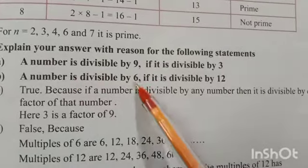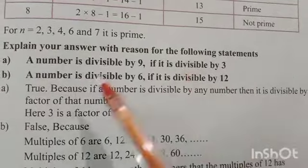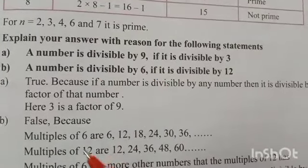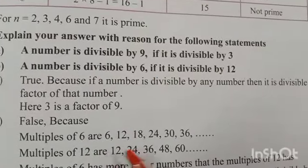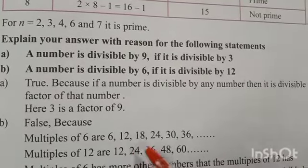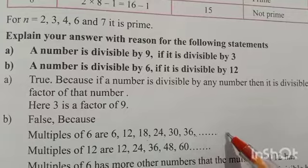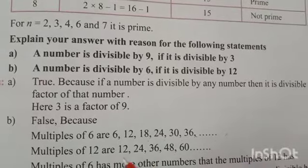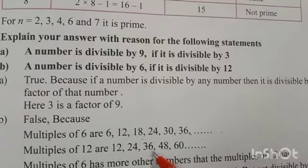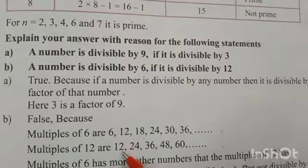Second statement: A number is divisible by 6 if it is divisible by 12. To check this, find the multiples of 6: 6, 12, 18, 24, 30, 36, etc. Multiples of 12 are: 12, 24, 36, 48, 60, etc.